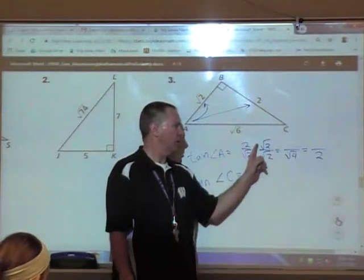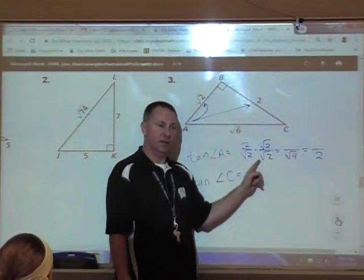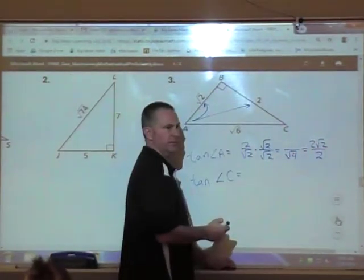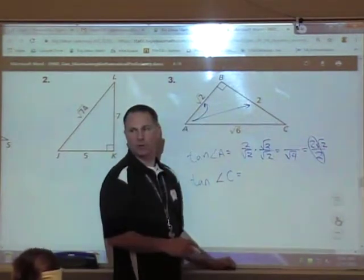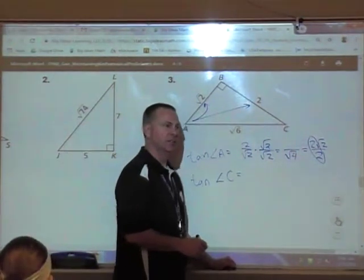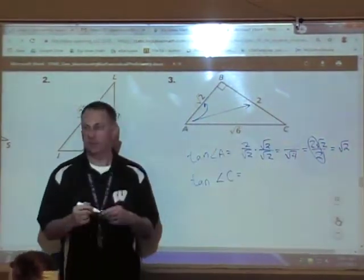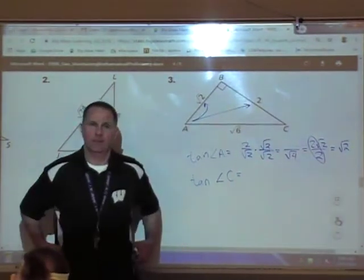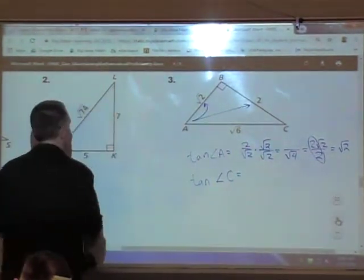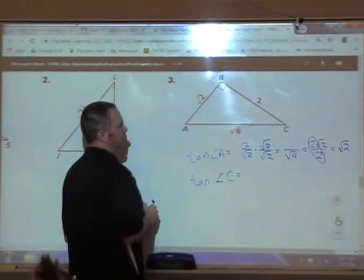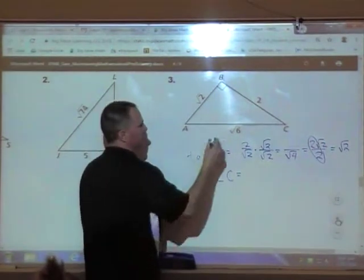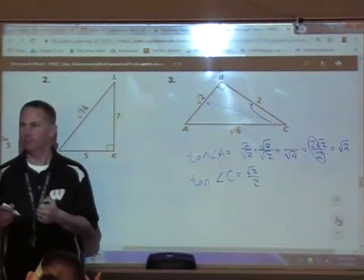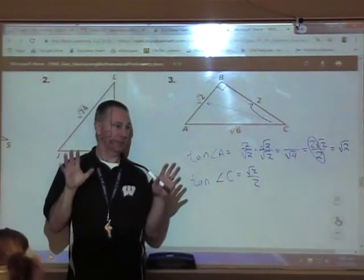So this is called rationalizing your denominator. Whatever your radical is in your denominator, multiply it by over itself, and that removes the square root from the denominator. So what do we have on top? Just 2 square root of 2. But if you can reduce those numbers, you reduce them, what's 2 over 2? So this answer is really square root of 2. This is math, guys. We're starting to get to the point where we're going to do some work. All right, I'm going to do tangent of angle C. Opposite over adjacent. And you're done.